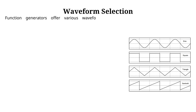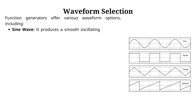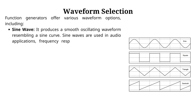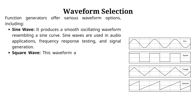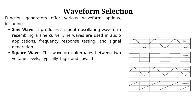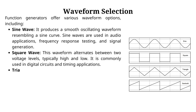Now we will discuss key features and controls of a function generator. Waveform selection: function generators offer various waveform options, including sine wave, which produces a smooth oscillating waveform resembling a sine curve. Sine waves are used in audio applications, frequency response testing, and signal generation. Square wave: this waveform alternates between two voltage levels, typically high and low, and is commonly used in digital circuits and timing applications.